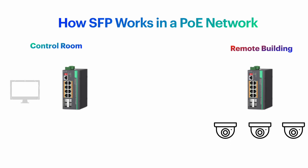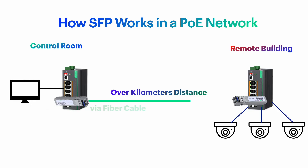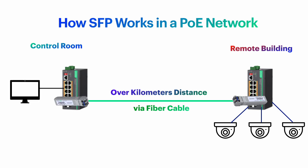Let's look at how SFP works in a PoE network. Say you're managing a large site — maybe a campus, factory, or smart city project — where your control room is hundreds of meters away from your devices. Running regular Ethernet won't cut it, and daisy-chained PoE extenders aren't reliable at that scale. The smarter setup: use SFP-enabled PoE switches at your control center, run fiber to remote buildings or outdoor enclosures, and at each remote point place a secondary PoE switch powered locally. That switch then powers cameras, APs, sensors — whatever you've got.